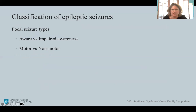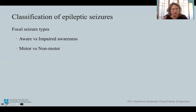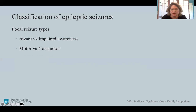Focal seizure types are further broken down into 'aware' — where I maintain consciousness during the seizure — and 'impaired awareness,' where the individual might be dazing off or speaking gibberish. They're further broken down into motor and non-motor. For instance, if I had tingling or a visual phenomenon during my seizure, that would be a focal aware or impaired awareness non-motor seizure.